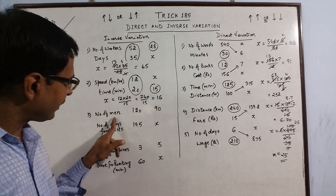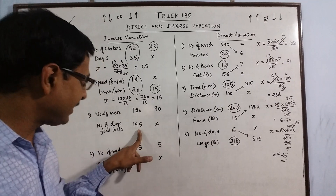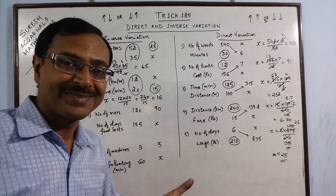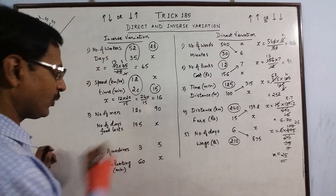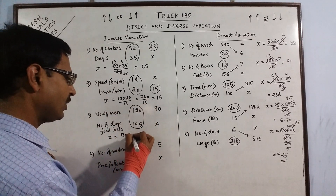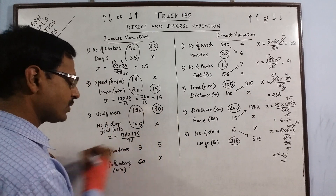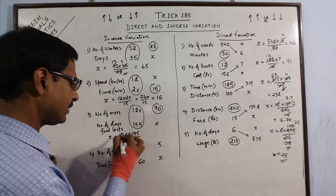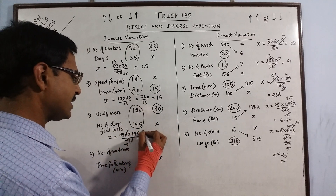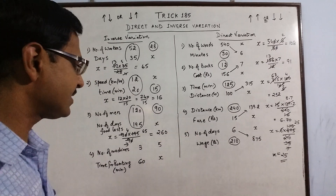If there are 120 men and food for them lasts 195 days, then if the number of men decreases to 90, the food will last more days — so this is inverse variation again. Multiply the two known values one below the other: 120 into 195, and divide by 90. The zero cancels, then 3 goes into 12 four times and into 9 three times. So 65 into 4 equals 260 days. The answer is 260 days.